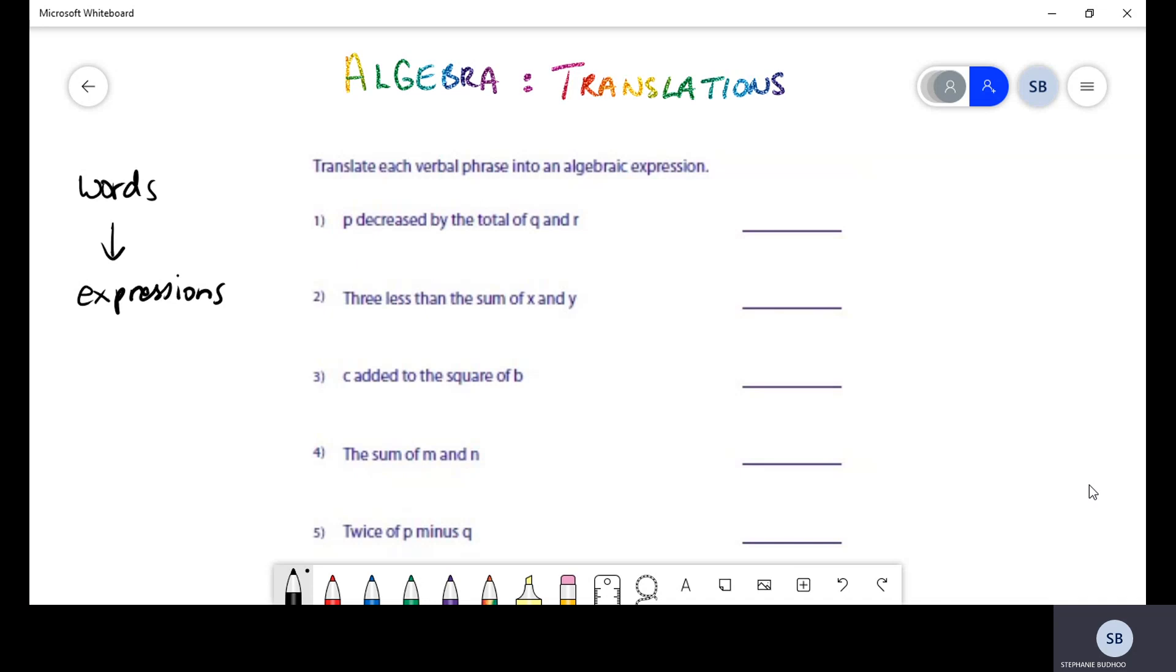Now when you're doing translations, there's keywords you need to look for. For example, in this first question we have p being decreased by the total of q and r. When you read a question like that and they want you to translate that sentence into a mathematical expression, you need to look out for those keywords.